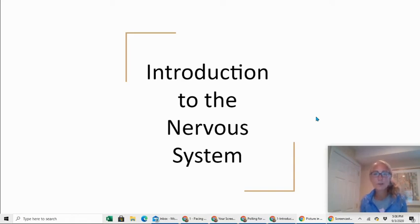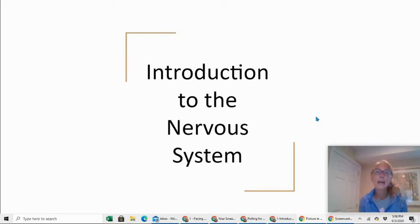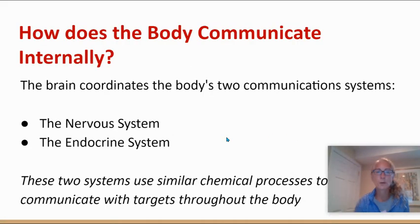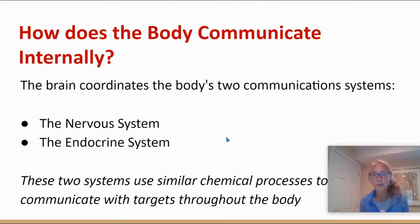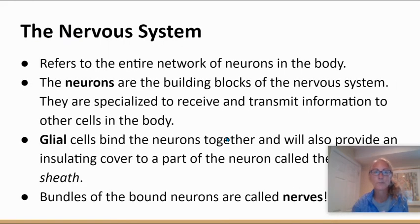Welcome to unit two. Congratulations, you're done with one of the nine units we have to go through this year. We are going to be talking about the nervous system, which is one of our body's two communication systems, along with the endocrine system. Both of these systems use similar chemical processes to communicate with target cells and target organs throughout the body.